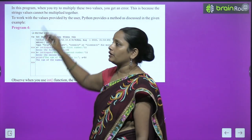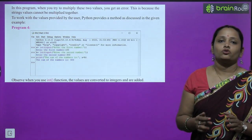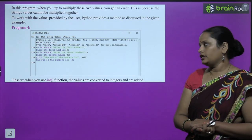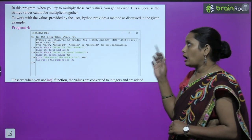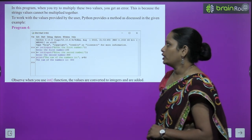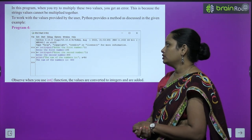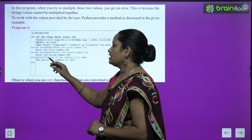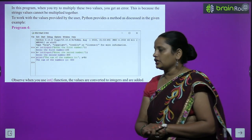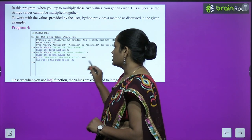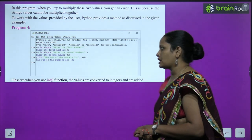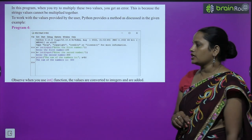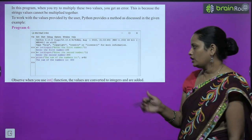To work with values provided by the user for arithmetic, Python provides a method: use int() along with the input function. So a = int(input('Enter first number')) and b = int(input('Enter second number')). When you then print the sum of a + b with values 100 and 300, the result is 400. When you use the int function, values are converted to integers and added correctly.